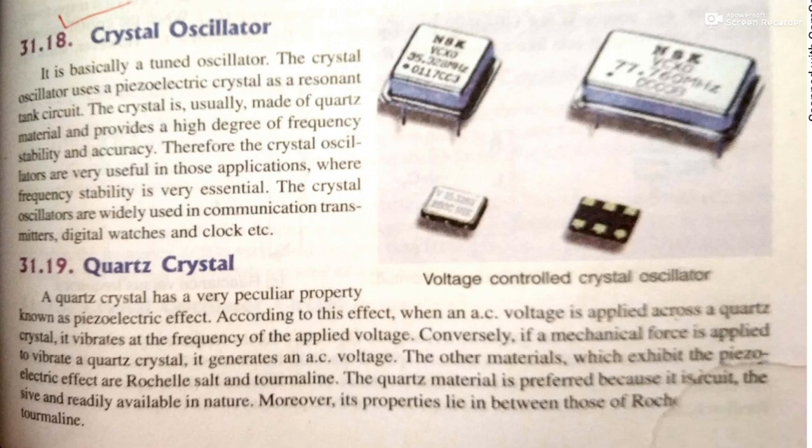The crystal is usually made of quartz material and provides a high degree of frequency stability and accuracy. Frequency sustainability over a long time and accuracy may be maintained in crystal oscillators. Actually, this factor depends upon the product of L and C.